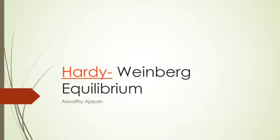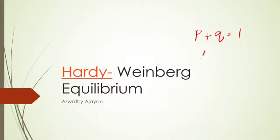Hardy-Weinberg equilibrium is a principle stating that genetic variation in a population will remain constant from one generation to the next in the absence of disturbing factors. We are concentrating on the term 'absence of disturbing factors.' There are factors which can affect this constant value. We know that p² + 2pq + q² = 1, and also p + q = 1, where p is the dominant allele and q is the recessive allele.